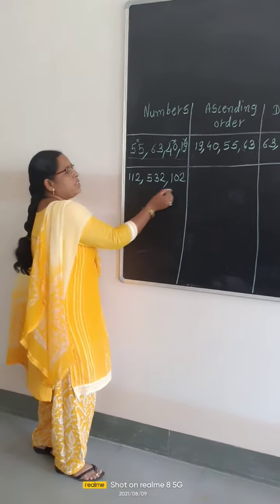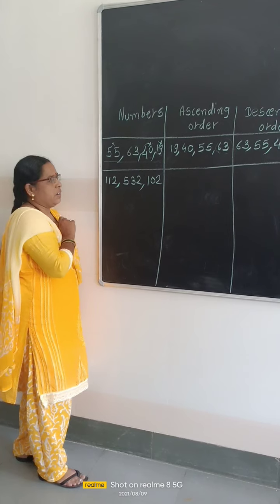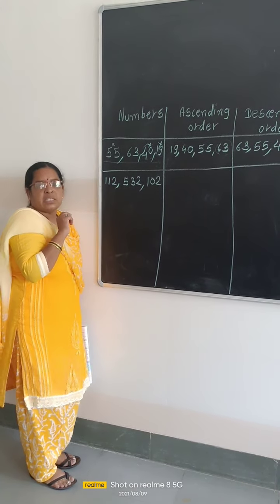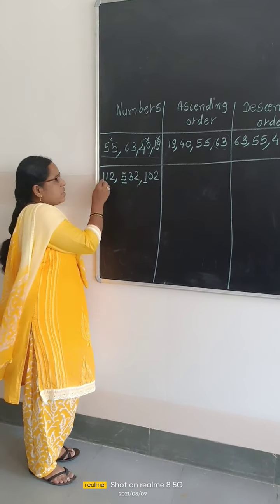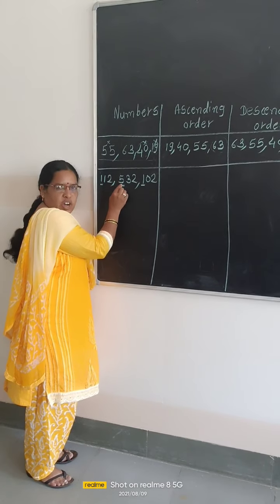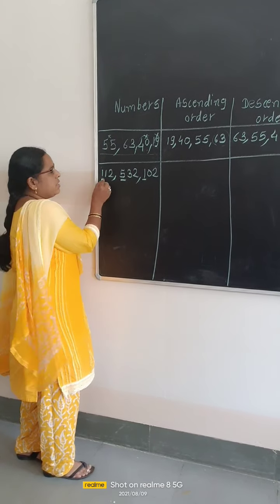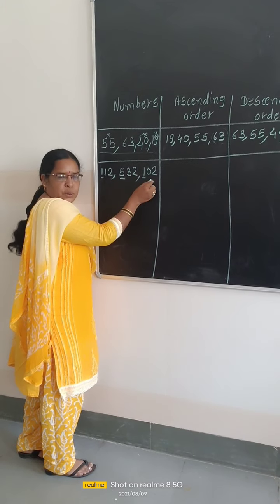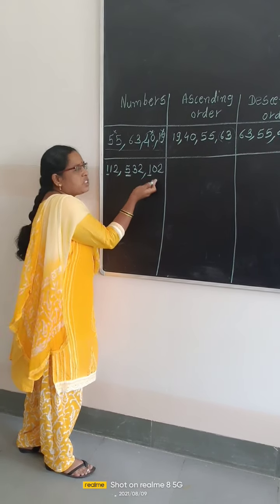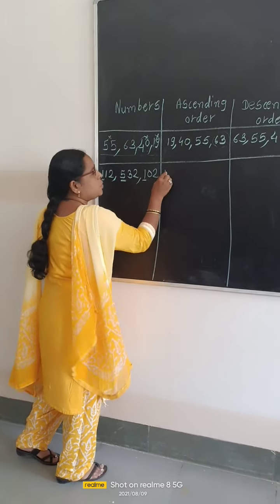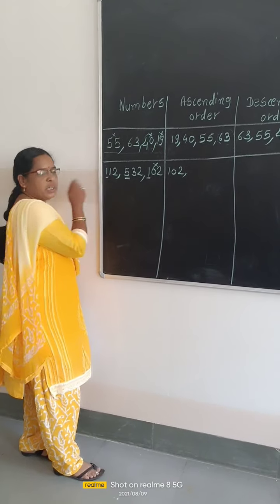Okay students, now from these three numbers, first of all find which is the smallest number. When there are three-digit numbers, compare the digits which are present at the hundreds place. Here 1 is present, here 4 is present, and here 1 is present. Now for this 1 and this 1, how do we decide which number is smaller? This is 102 and 102 — which number comes first? We know 102 comes first, so 102 is the smallest number. So we are writing 102 firstly.